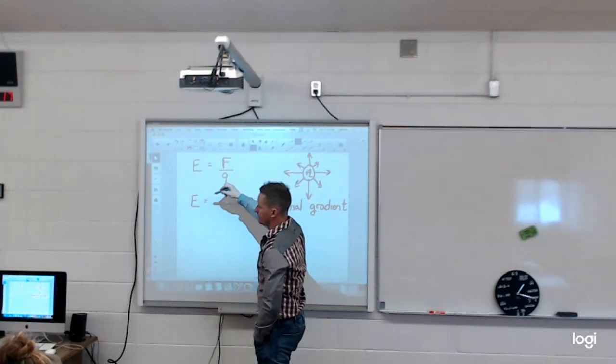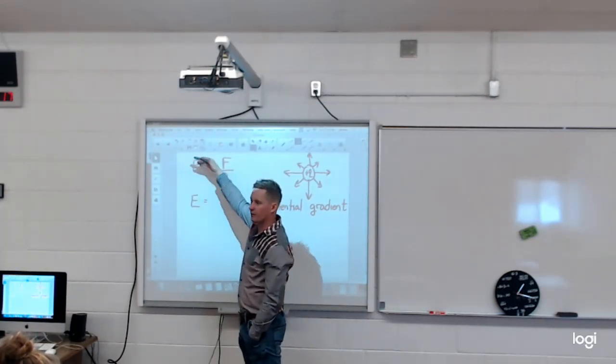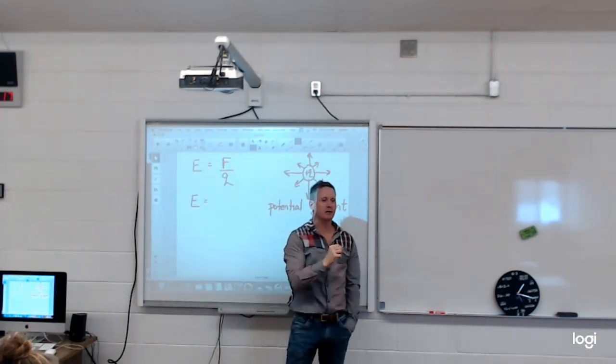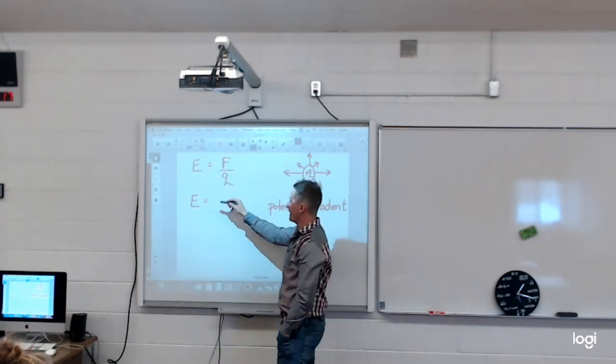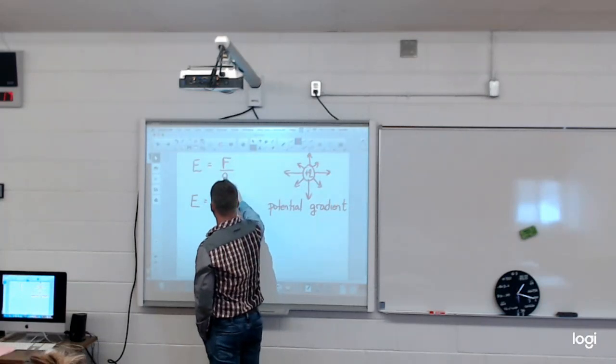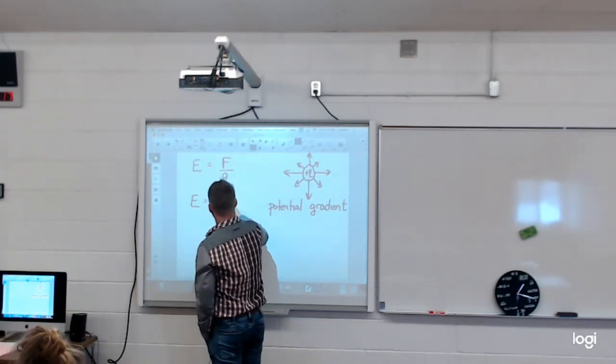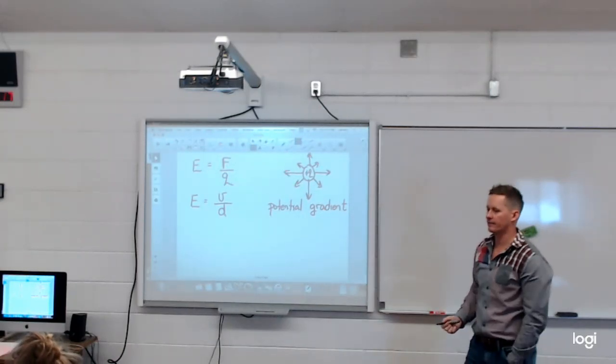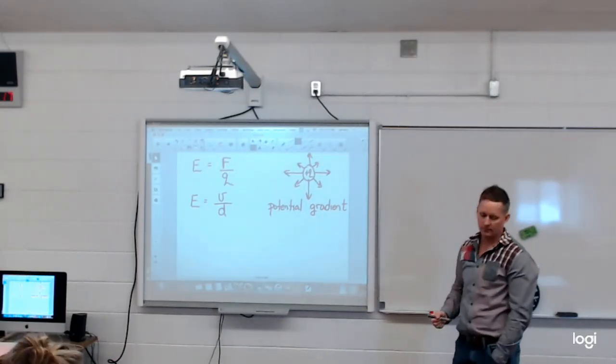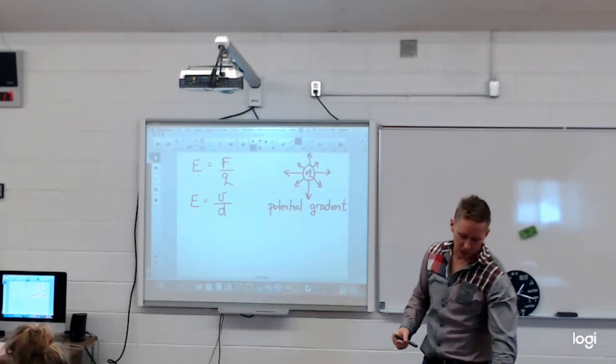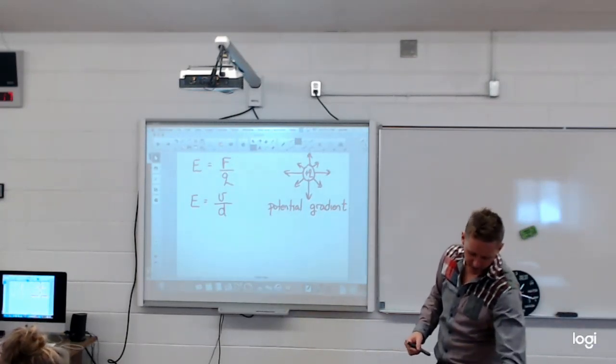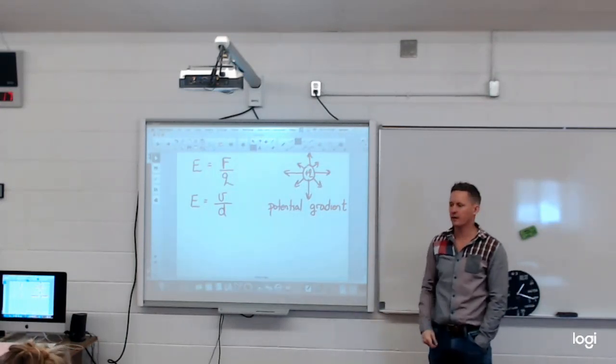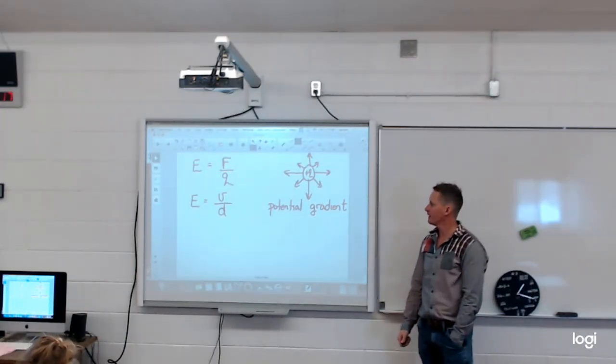is the same as electric field intensity. They're the same, the only difference being the units are different. So to calculate what the potential gradient is, it's the amount of potential difference over the distance that it is actually moving. So potential gradient of an electric field is the change in potential per unit of distance. That's how much the potential difference changes over the given distance.